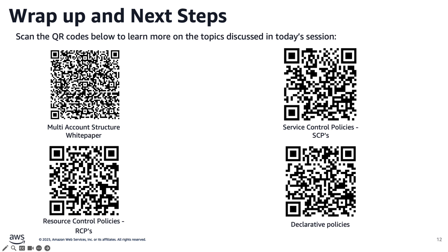Thank you for watching to the end of this video. These security controls and account structures are foundational to building a robust enterprise-grade AWS environment. By implementing these recommendations, you will significantly enhance your security posture while maintaining operational efficiency. I encourage you to scan the QR codes and review the resources to begin your implementation journey today. Remember, security is everyone's job, but it starts with the right architecture. Please reach out to your AWS account teams if you have any questions. Thank you and have a nice day.